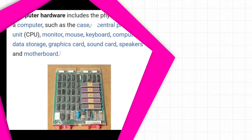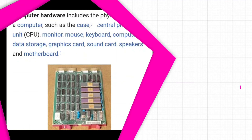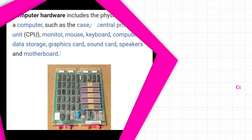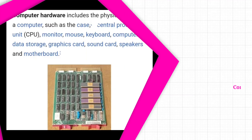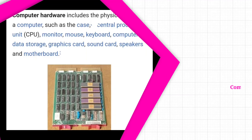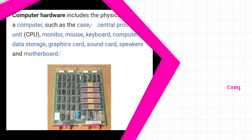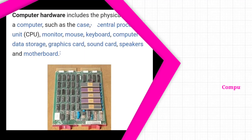Computer hardware includes the physical parts of a computer such as the case, central processing unit (CPU), monitor, mouse, keyboard, computer data storage, graphics card, sound card, speakers, and motherboard.